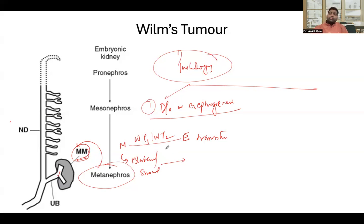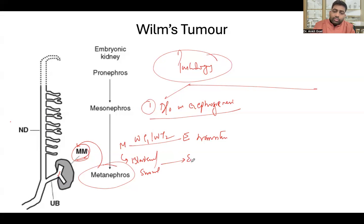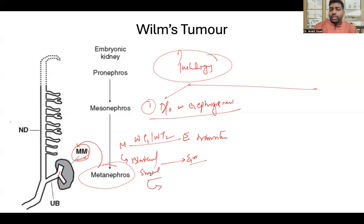You find blastomal cells, stromal cells, and epithelial cells because this transition doesn't happen completely — so you find partial epithelial cells, some stromal cells, and some blastomal or immature cells. When you find all these cell types together in the histology of a Wilms tumor, this is known as a classic or triphasic Wilms tumor.